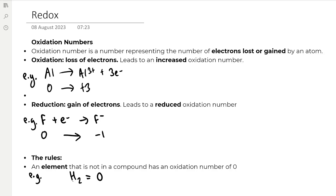Oxidation numbers. An oxidation number is a number representing the number of electrons lost or gained by an atom. The definition of oxidation is the loss of electrons, and it leads to an increased oxidation number. For example, when you have oxidation of aluminium to form aluminium 3+ ions, the oxidation number of aluminium increases from zero to plus three as it has lost three electrons.